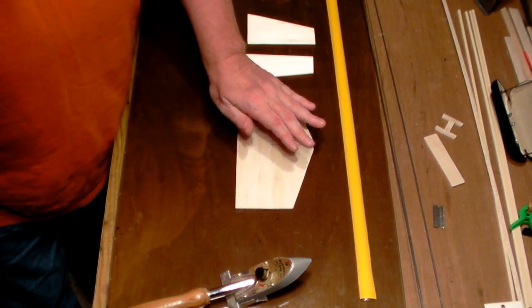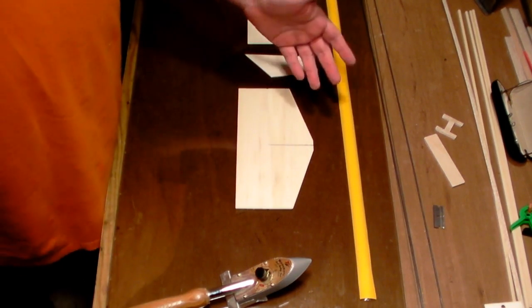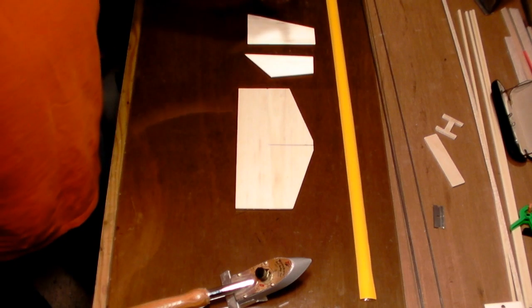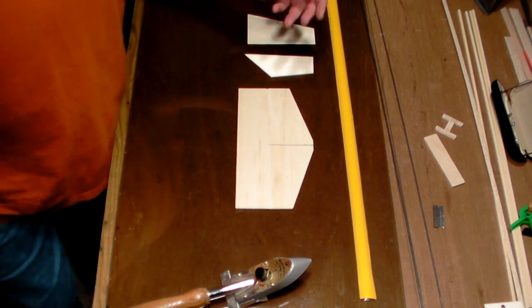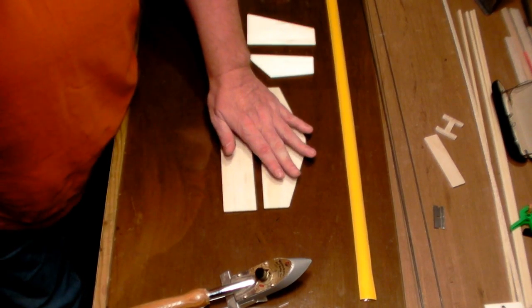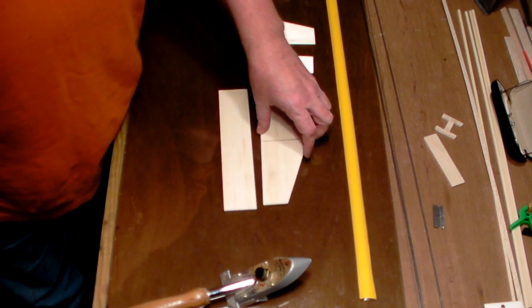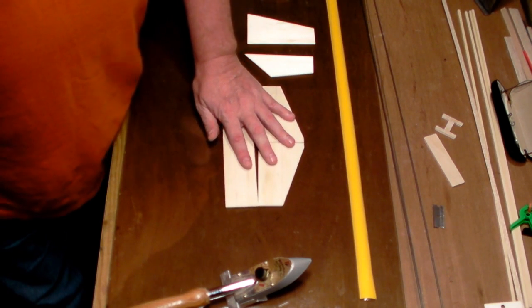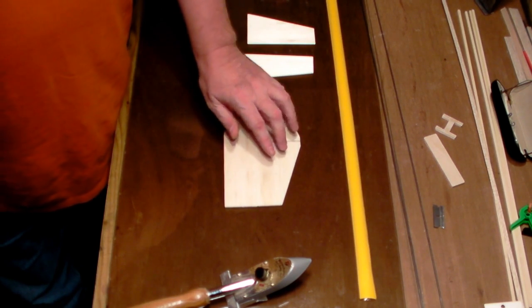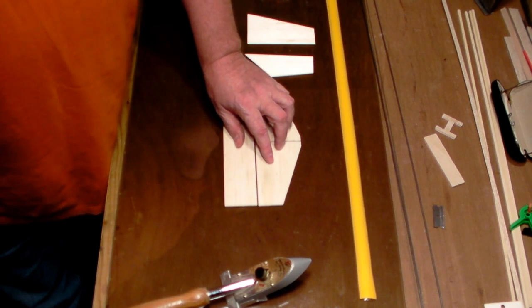You're not going to be able to hinge this just like a typical foamy. You're going to have to hinge like we do with balsa. Because this is thinner balsa, 3/32nds of an inch thick, about the only kind of hinge you're going to be able to pull off here is a CA hinge, which you can buy very inexpensively.